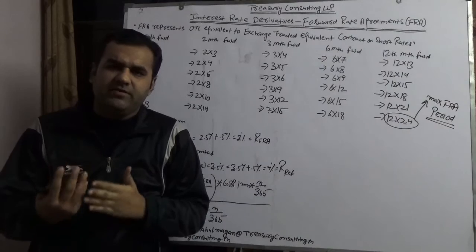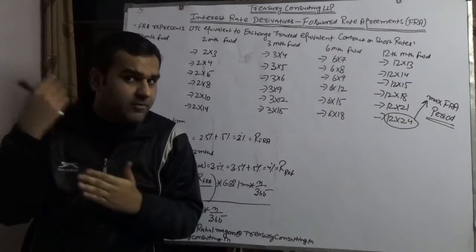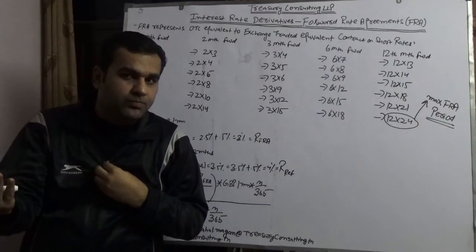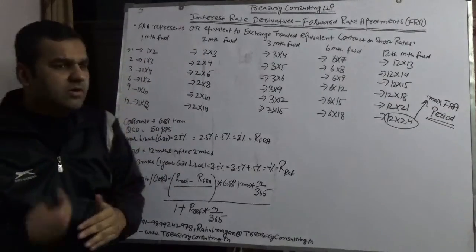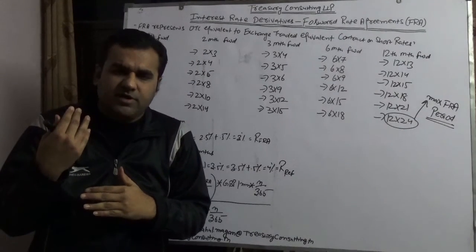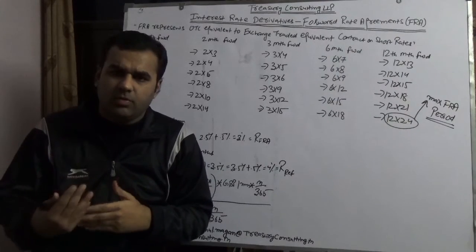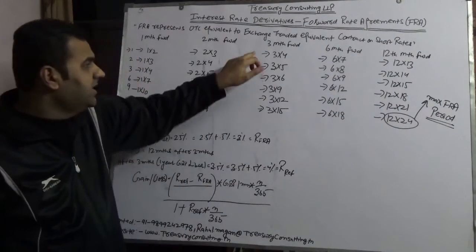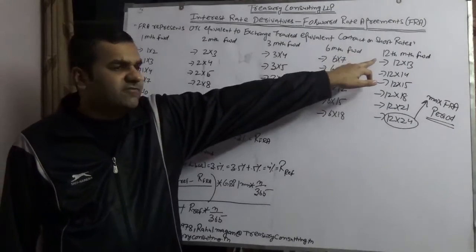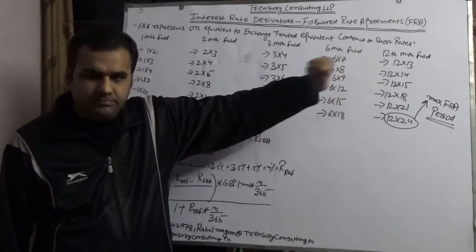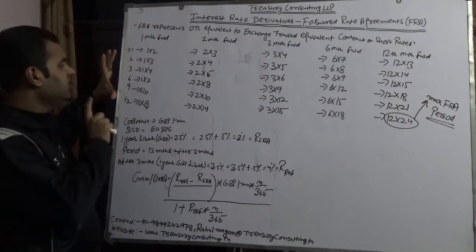What do we mean by one-month forward? It means a certain amount of an asset or a liability will enter your books one month from now. Two-month forward means it will come into your books after two months. Similarly, three months, six months, and twelve months.